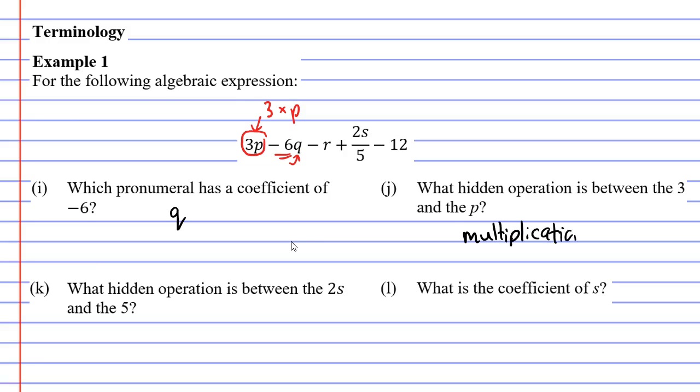I want to point out that it's not always a number next to a pronumeral. For instance, you could have something such as pq. That's the same as p times q. And sometimes you'll see it with brackets as well. For instance, you might see p plus 3 with the 2 out the front of the brackets. And that also means that we are multiplying.